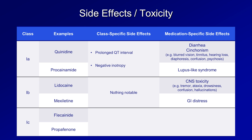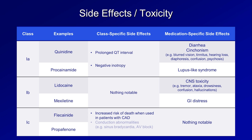While neither flecainide nor propafenone have drug-specific side effects, they both have a very notable problem with increasing the risk of sudden cardiac death when used in patients with coronary artery disease. Thus, the presence of CAD is considered to be an absolute contraindication. They are also avoided in patients with heart failure — in other words, 1c drugs are only used in patients with structurally normal hearts. 1c drugs also cause conduction block in the sinus and AV nodes, leading to sinus bradycardia and AV block, and like the 1as, 1cs are also negative inotropes.